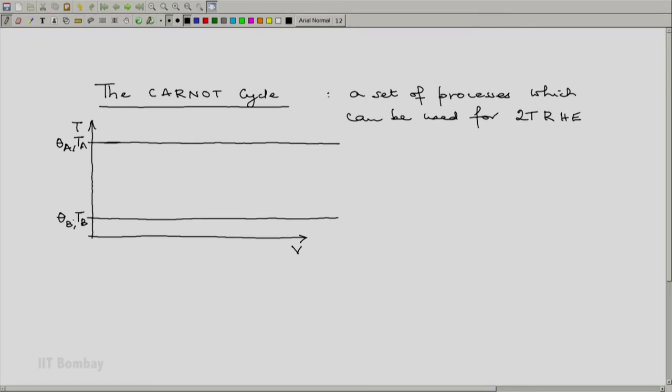Our final aim is to show that T_A equals theta_A and T_B equals theta_B. But we will have to follow a rather scenic route, long winded scenic route till we come to that conclusion.